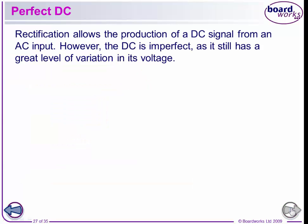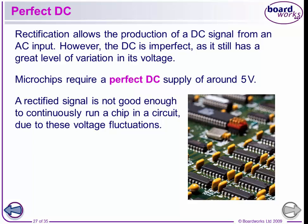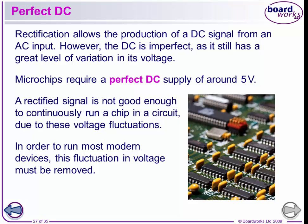If you remember, rectification allows the production of a DC signal from an AC input. However, the DC is imperfect as it has a great level of variation in its voltage. But microchips require a perfect DC of around 5 volts to work. A rectified signal, even if it's fully rectified, is not good enough to continuously run a chip in a circuit because of these fluctuations in the voltage. So, in order to run computers and so on, this fluctuation must be removed. And this process is called smoothing.